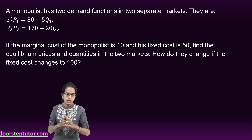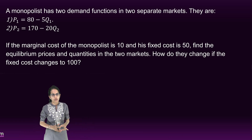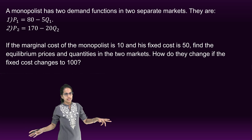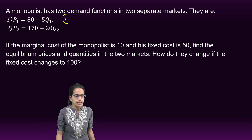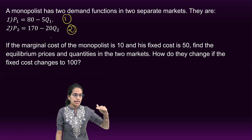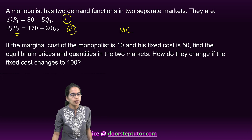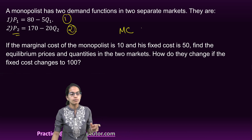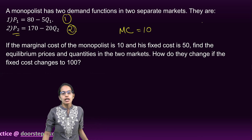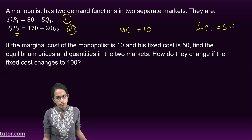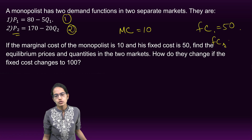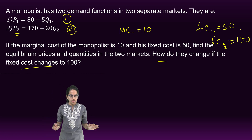This monopolistic curve has two demand functions for two separate market conditions — one for the first market condition and one for the second. Besides the price values given, the marginal cost is 10 and the fixed cost is 50 in the first case. In the second case, the fixed cost increases to 100. How would the profit change? That is the question being asked.